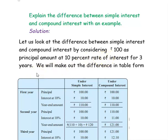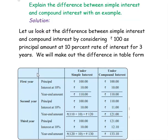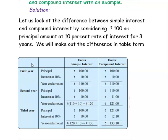We will make out the difference in table form. What we are considering: principal is Rs. 100, rate of interest is 10%, and number of years is 3 years. We have done in our previous videos the simple interest calculated using the formula, but now we will do it year by year.